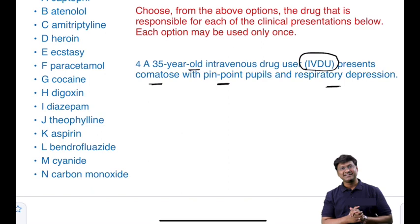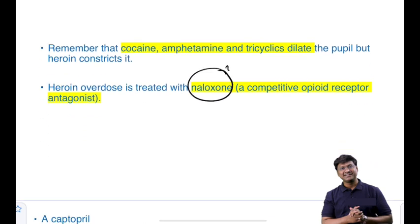The fourth clinical scenario: a 35-year-old intravenous drug user presents comatose with pinpoint pupils and respiratory depression. This is clear-cut — pinpoint pupils and respiratory depression in an IV drug abuser indicates opioid poisoning, specifically heroin. Note that cocaine, amphetamines, and tricyclic antidepressants dilate the pupil; heroin is the drug that causes constriction. Treatment is naloxone, which should be given in heroin overdose.